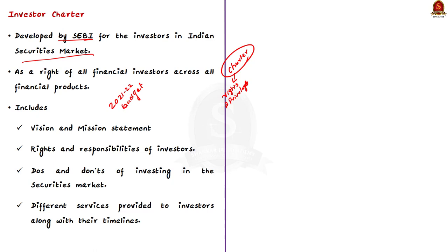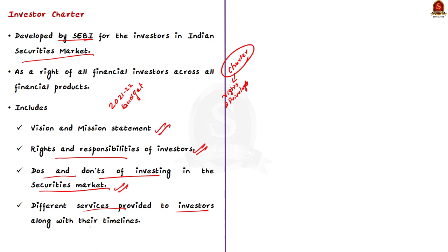The investor charter is developed as a right of all financial investors across all financial products. It is a single document containing different services pertaining to investors along with their respective timelines. The charter includes the vision and mission statement, the rights and responsibilities of investors, the do's and don'ts of investing in the securities market, and the different services provided to investors along with their timelines.